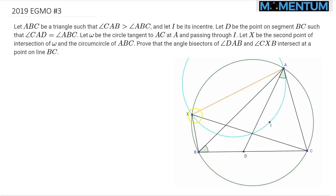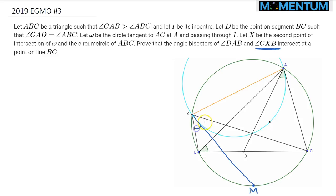I'll go ahead and first draw the angle bisector of CXB because it's relatively easy to draw. It can be drawn by first marking the midpoint of arc BC — let's label it M — so I can connect X to M, and clearly that must be the angle bisector. These two angles are congruent because the bisector hits arc BC at its midpoint M.